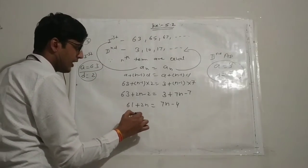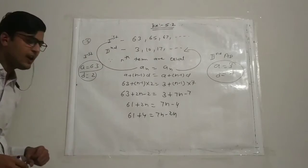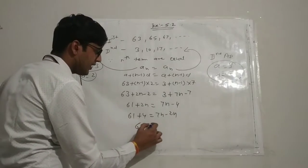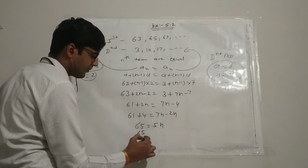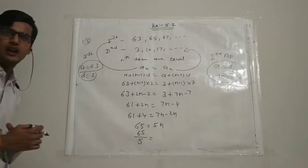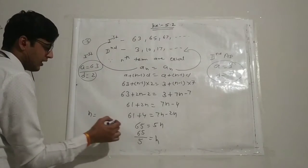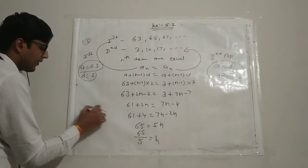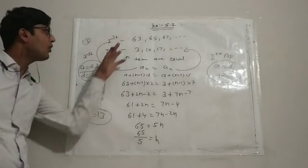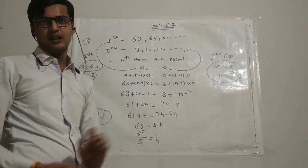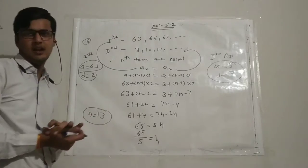So 61 plus 4 equals 7n minus 2n, giving 65 equals 5n, therefore n equals 65 divided by 5, which is 13. So the 13th term of both APs are equal.